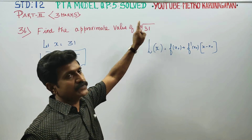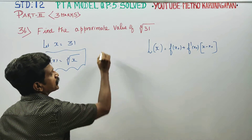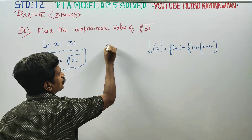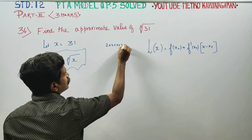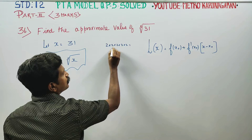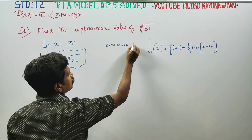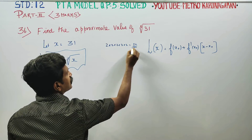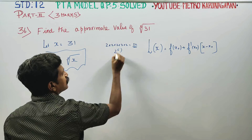Now, x₀ is chosen as 32, because 32 is a perfect 5th power. We can verify: 2 times 2 is 4, times 2 is 8, times 2 is 16, times 2 is 32. So 32 is our comfortable nearby number.